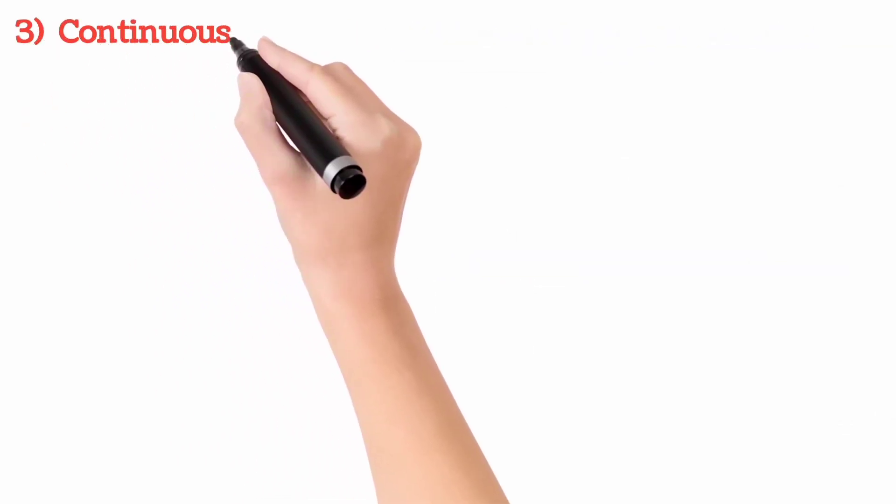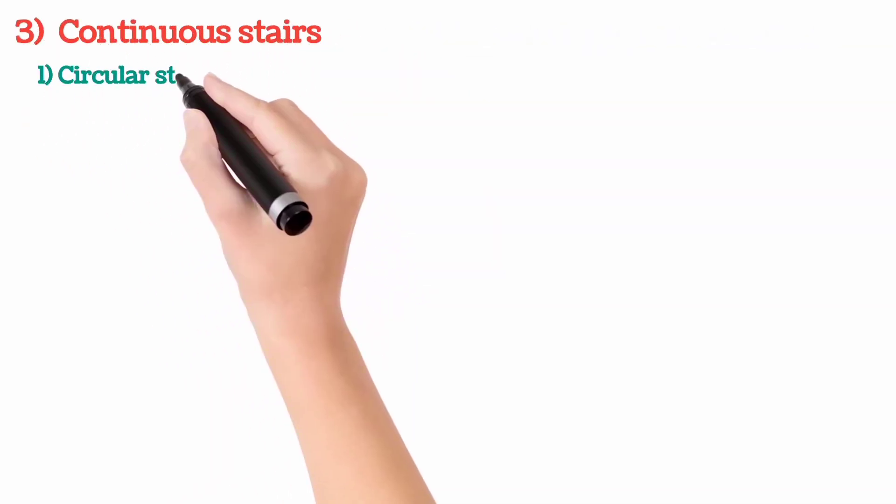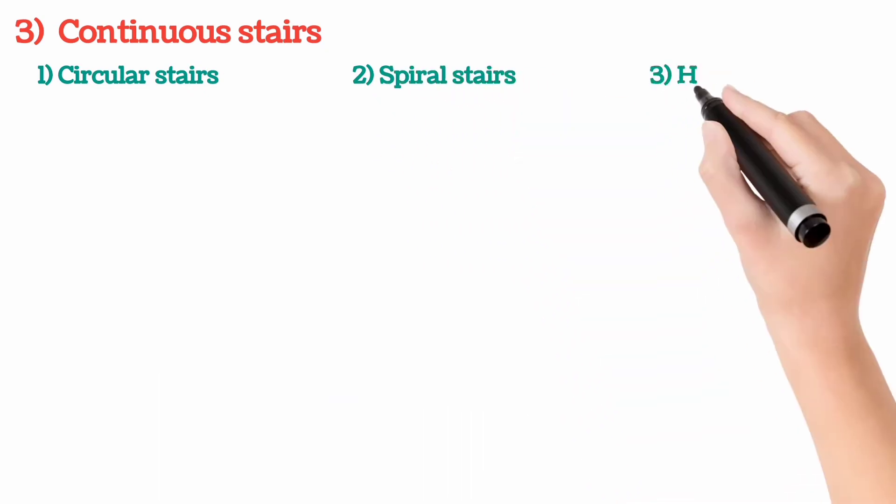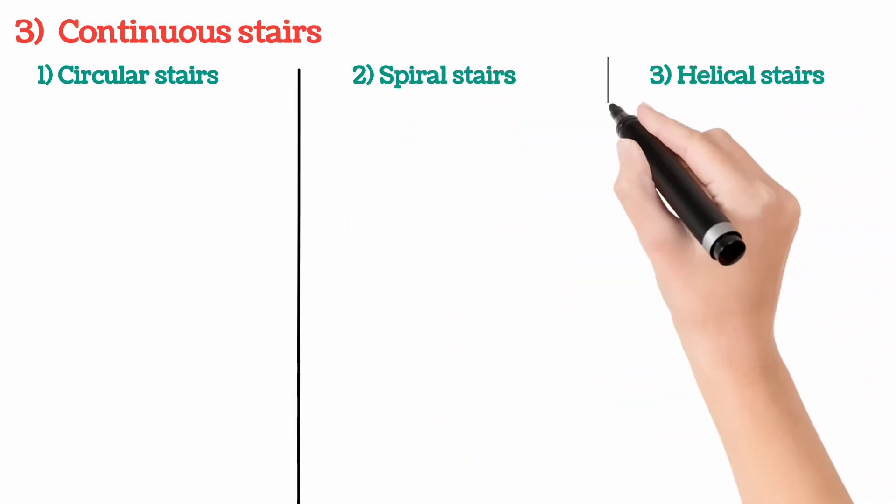Continuous stairs are further classified into: 1. Circular stairs, 2. Spiral stairs, 3. Helical stairs.